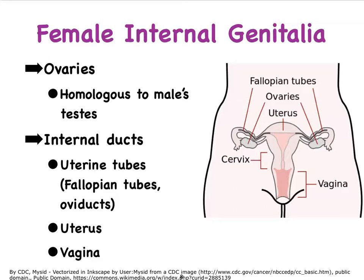The internal genitalia of the female can be divided up into the ovaries, shown right here, which by the way are homologous to the testes of the male. And then a series of ducts. The ducts include the fallopian tubes, which carry the fertilized egg into the uterus. The uterus is also considered a duct because it's a hollow structure. Here is our other fallopian tube, also referred to as a uterine tube or oviduct.